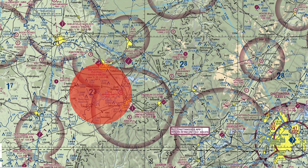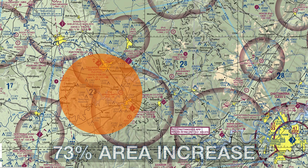To put things in perspective, upon engine failure at an altitude of 1,000 feet, this shaded area represents the possible landing spots in a no-wind situation. When the flaps are retracted, the area becomes much larger — that increase in area is 73%.